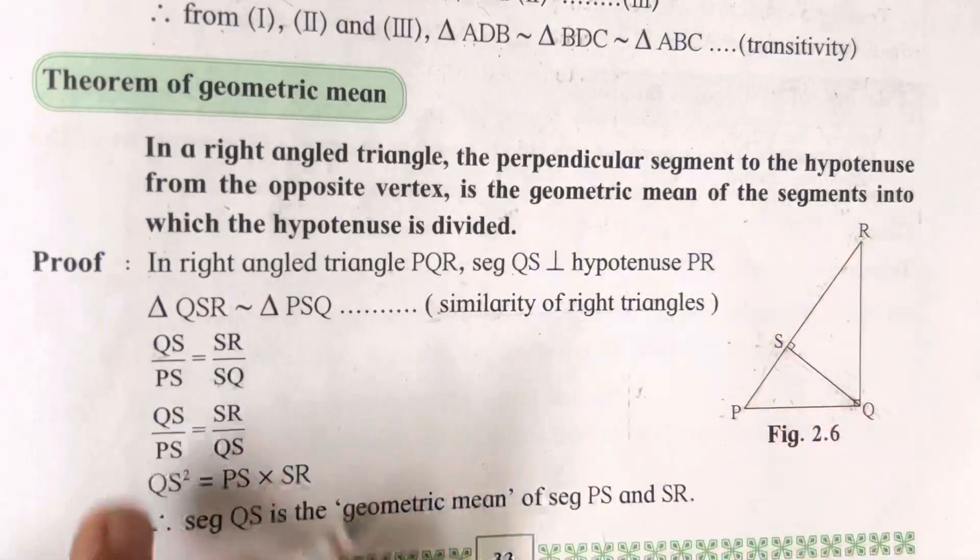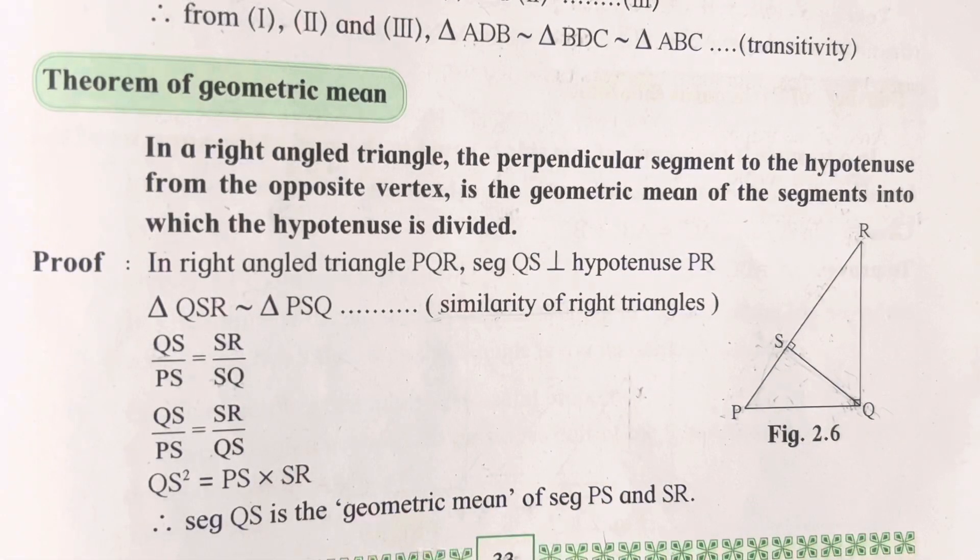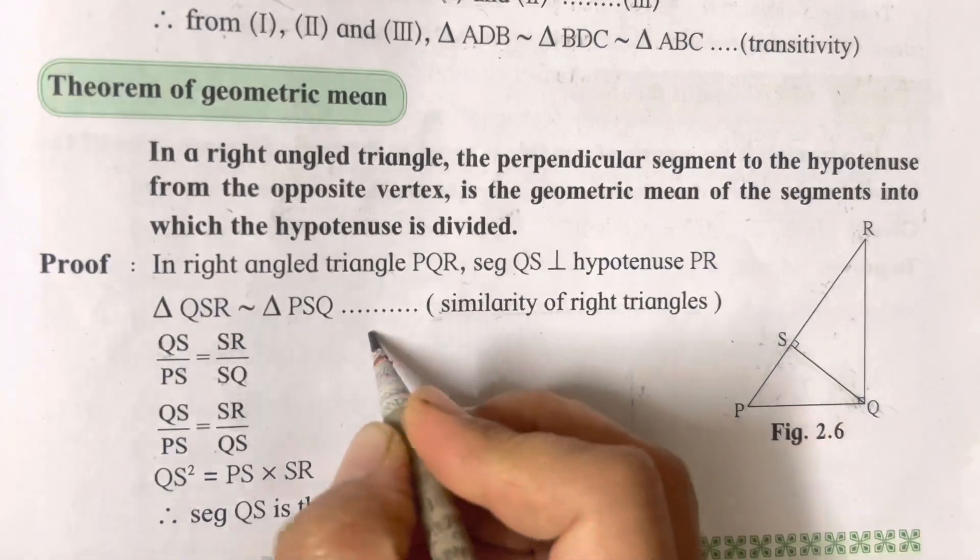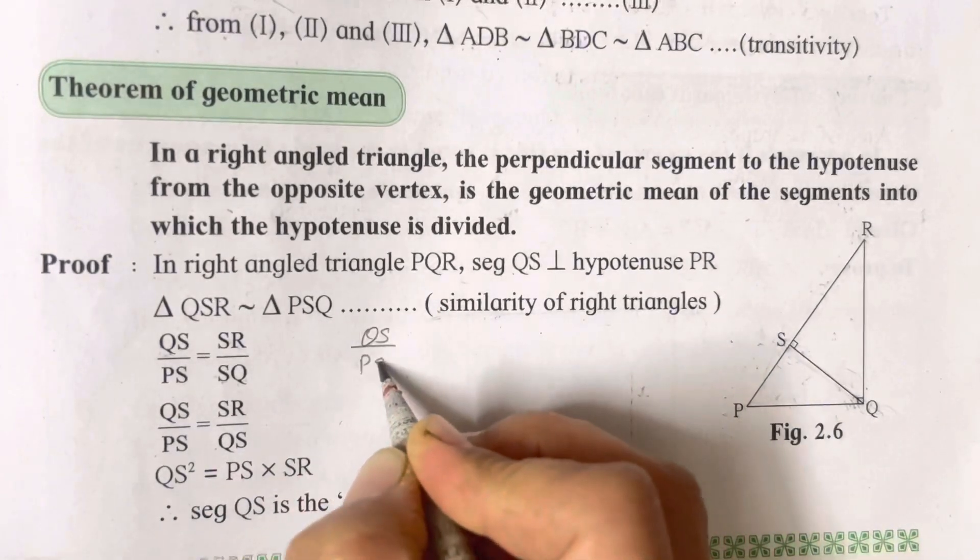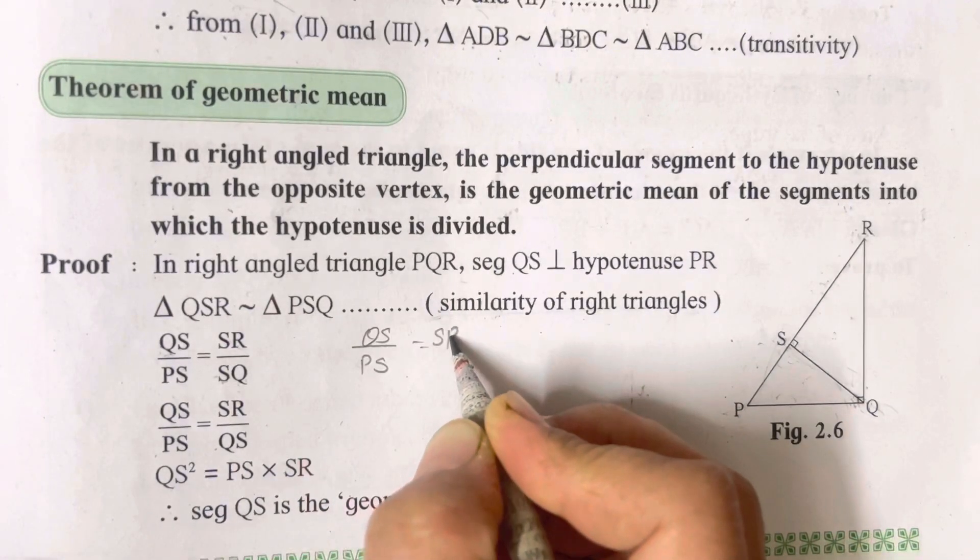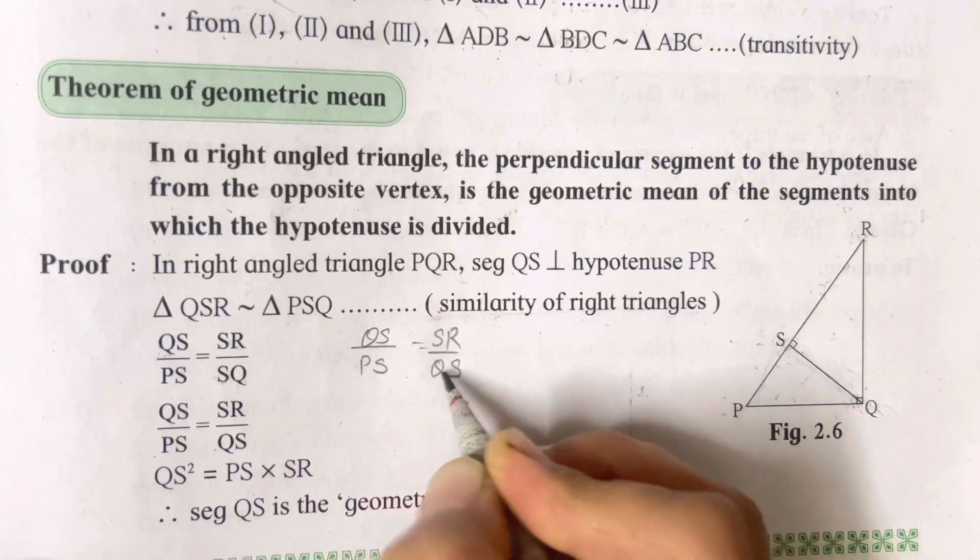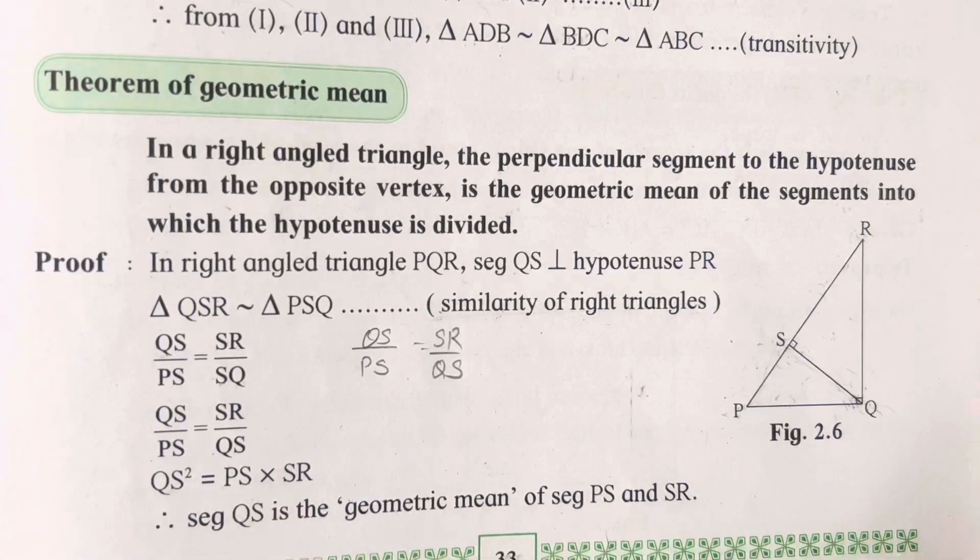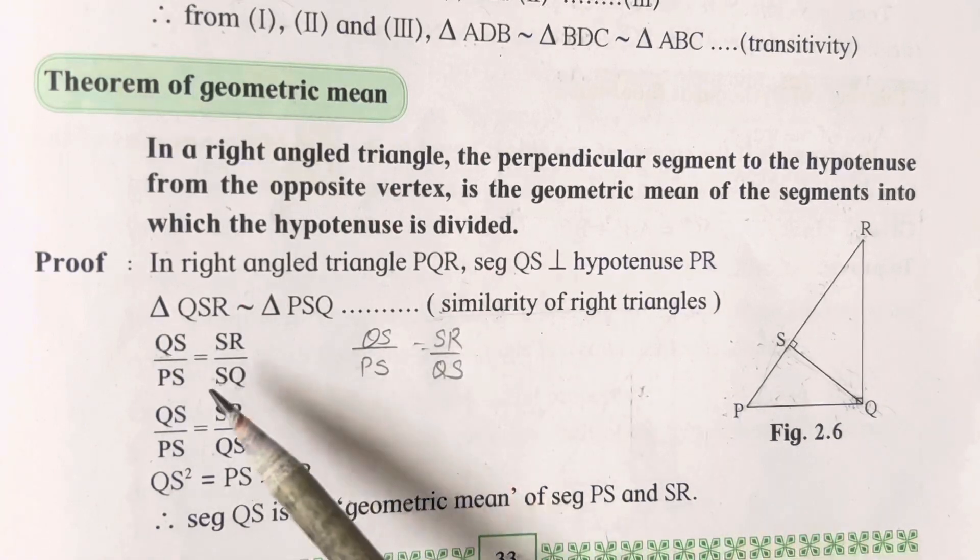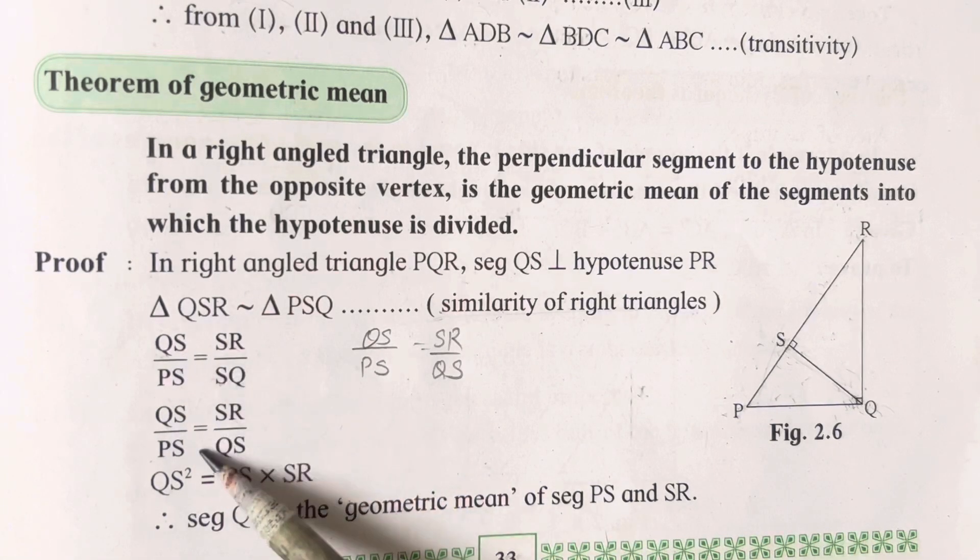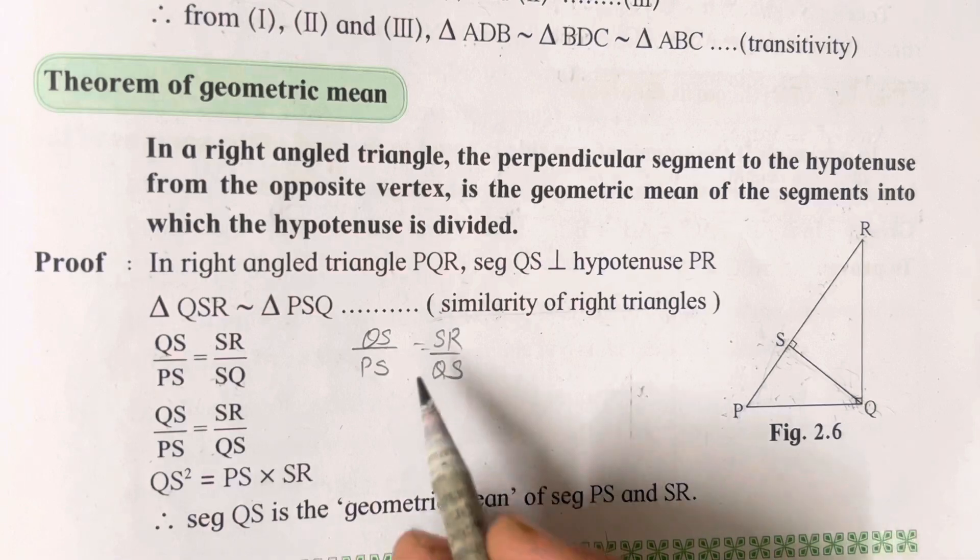In the textbook they have mentioned it, so write it that way also. Even if you are writing it this way, it will not cause any harm—SR upon QS, it's one and the same because we need QS only.